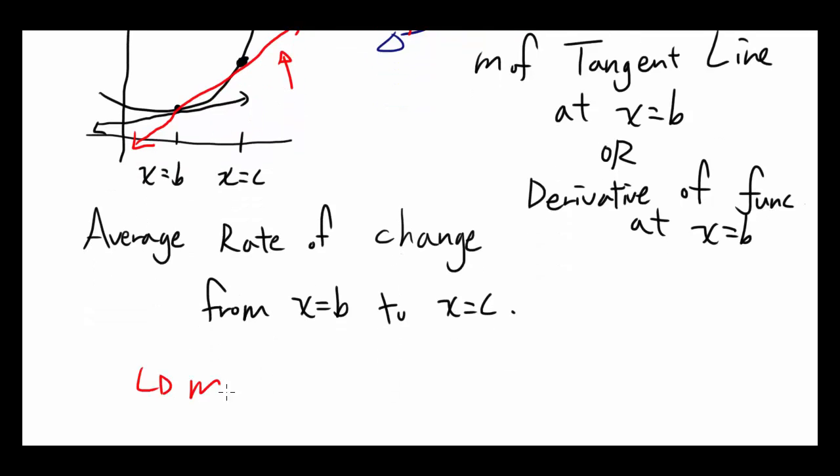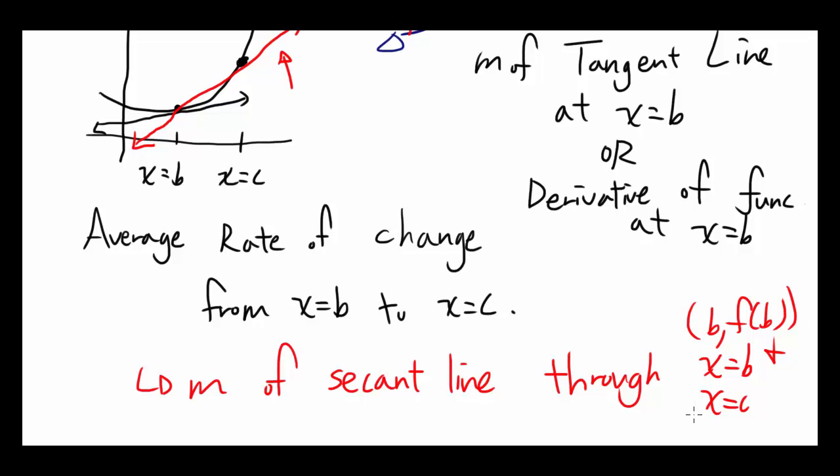So that's going to be the slope of secant line through the points x equals b and x equals c. It's the points that relate to x equals b, b f of b and c f of c.